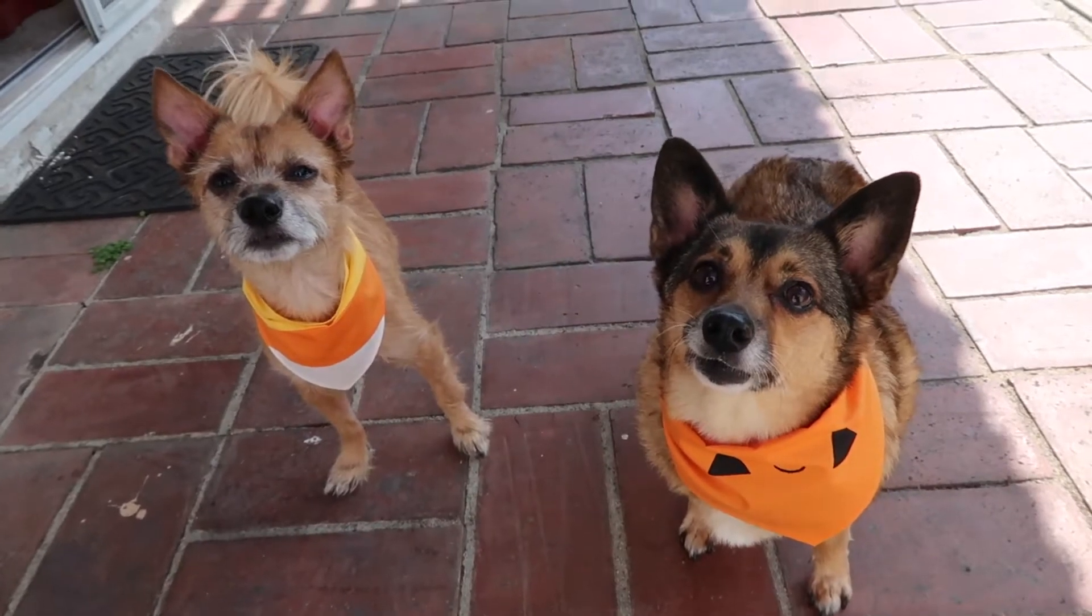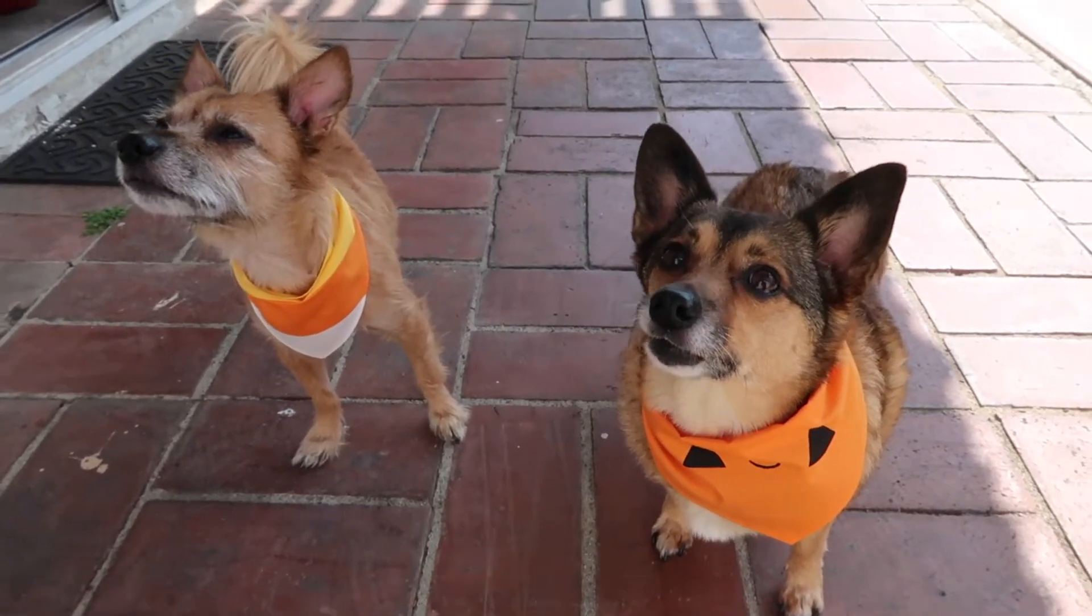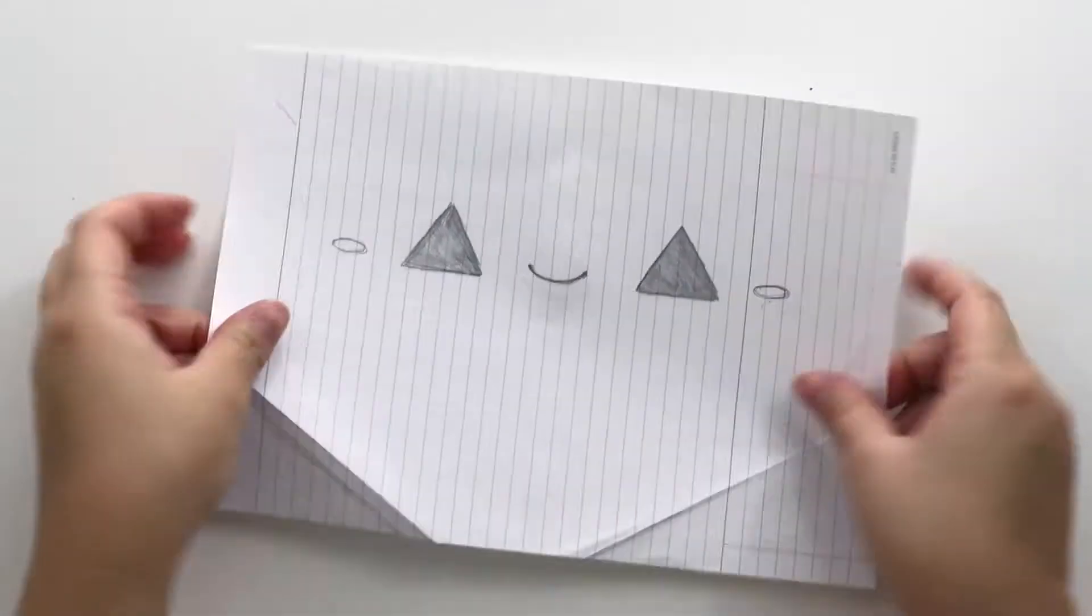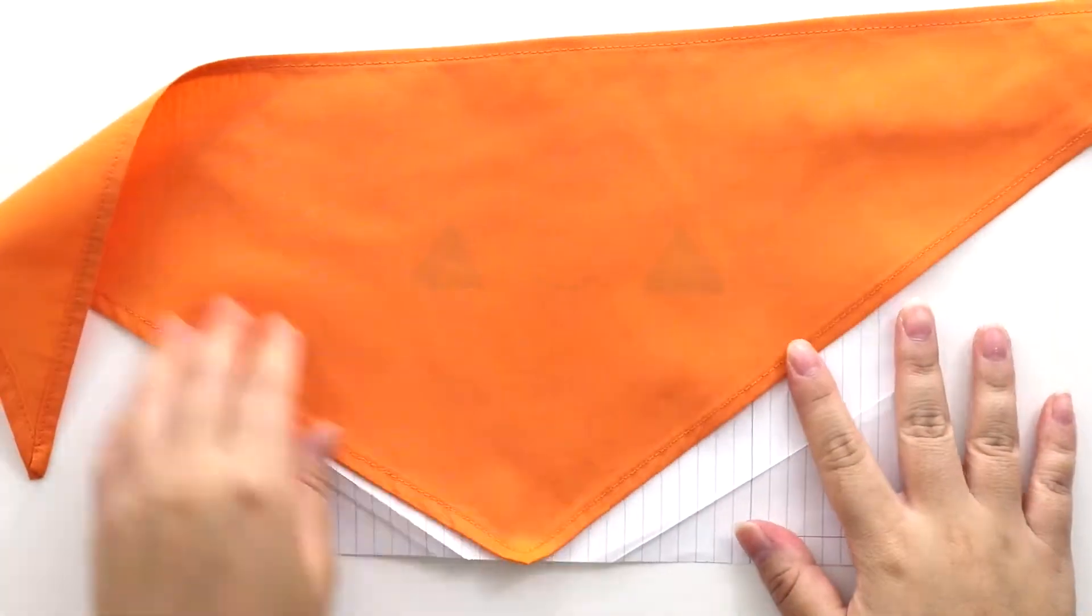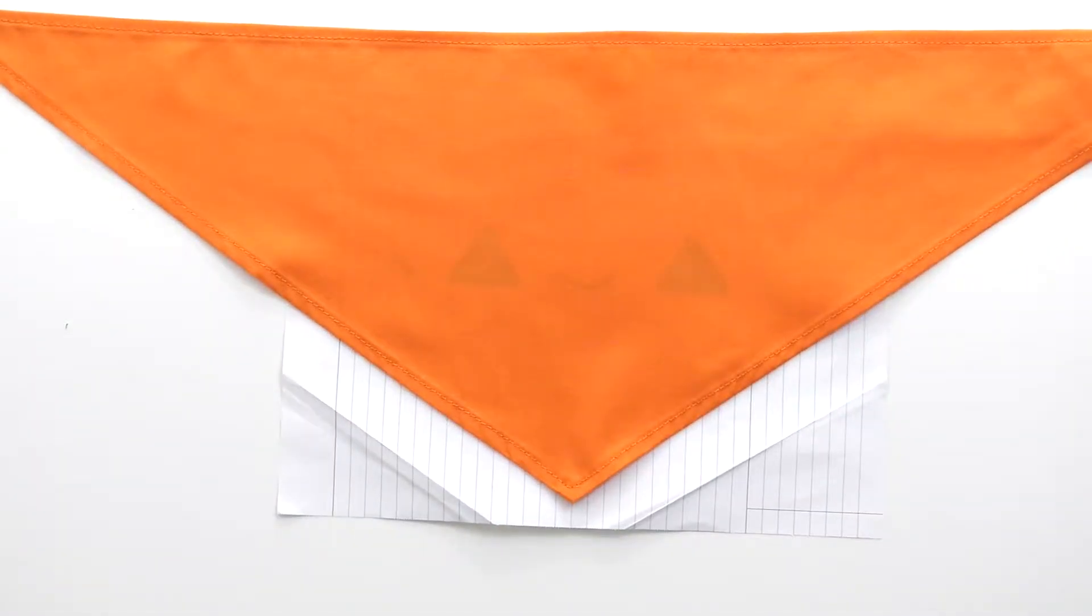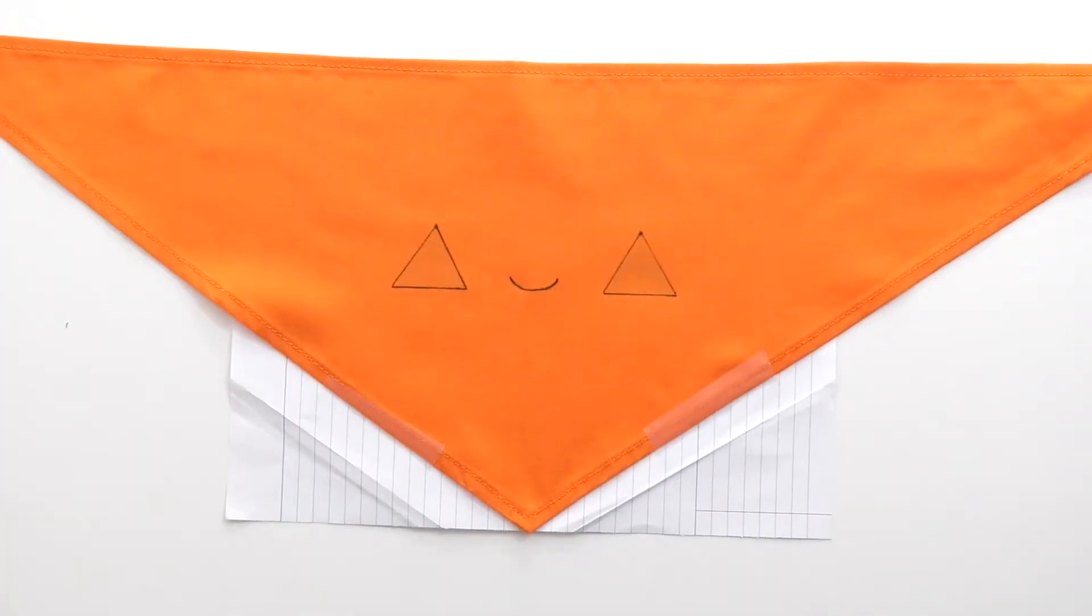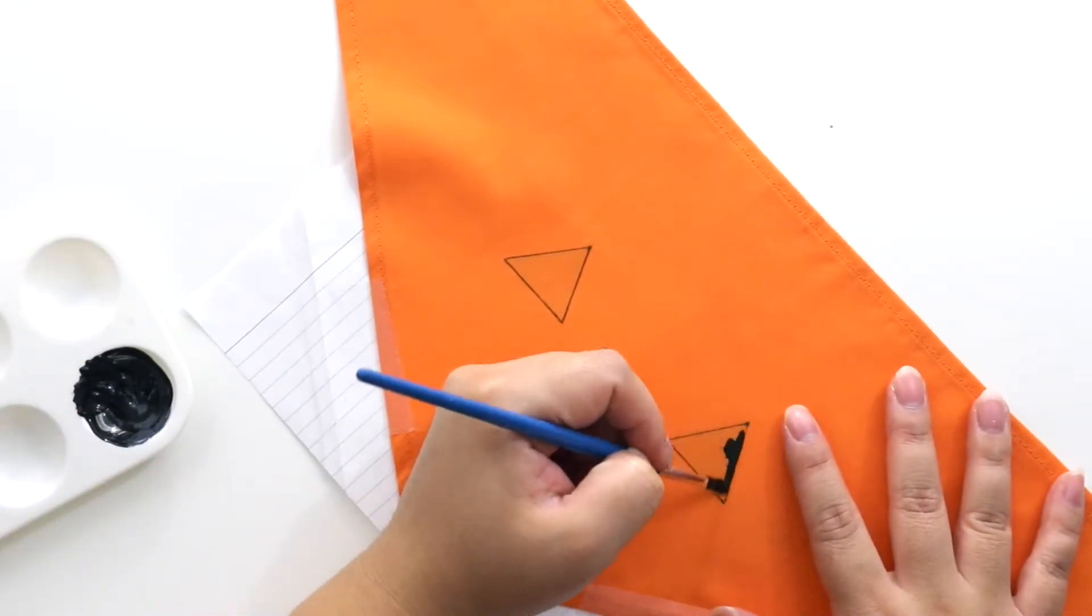Next up, similar to the word BOO, I thought a jack-o'-lantern bandana would be cute and fun. I sewed an orange bandana as my base, then sketched out my face design on a piece of paper and traced this onto the front with a fabric marker. I kept the face simple, knowing that my marker bled.